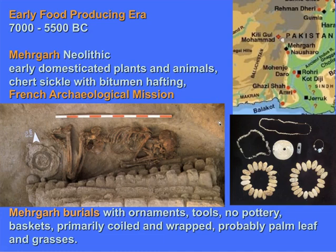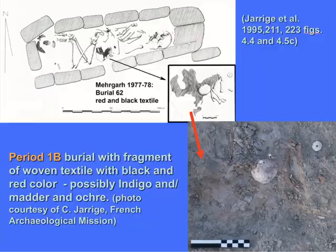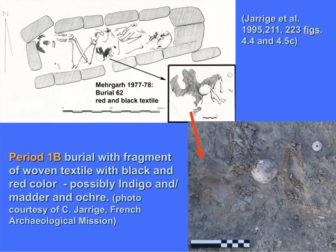The excavations at Mehrgarh, run by Jean-François Jarrige from the Musée Guimet and his wife Catherine and a wonderful archaeological team, excavated the Neolithic burials. In these burials they found evidence for basketry, many bone tools associated with weaving, and ornaments which would have been threaded by fine fibers, unfortunately not preserved. But in one burial they found evidence of textiles — a colored textile, just barely visible in the sediment. Catherine Jarrige and Aurore Dudier from the Musée Guimet sent this image to me just last night.